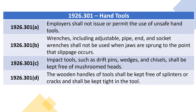1926.301 Hand Tools. 1926.301(a): Employers shall not issue or permit the use of unsafe hand tools. 1926.301(b): Wrenches, including adjustable, pipe, end, and socket wrenches, shall not be used when jaws are sprung to the point that slippage occurs. 1926.301(c): Impact tools such as drift pins, wedges, and chisels shall be kept free of mushroomed heads. 1926.301(d): The wooden handles of tools shall be kept free of splinters or cracks and shall be kept tight in the tool.